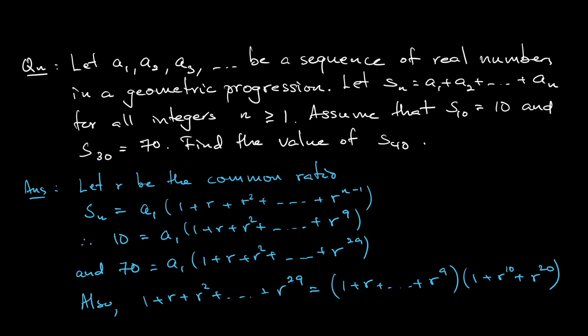Notice that if you expand it out, this one multiplied by this will be 1 plus r plus all the way until r to the power of 9. If you expand r to the power of 10 to this, that will continue, r to the power of 10 onwards all the way until r to the power of 19. And then r to the power of 20 multiplied by this will continue the 20 all the way until the 29. So in fact, these two expressions are equal to each other.